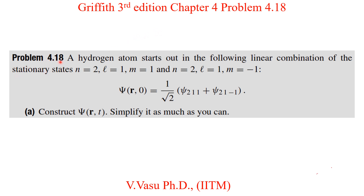Problem 4.18: A hydrogen atom starts out in the following linear combination of stationary states: n equal to 2, l equal to 1, m equal to 1, and n equal to 2, l equal to 1, m equal to minus 1.